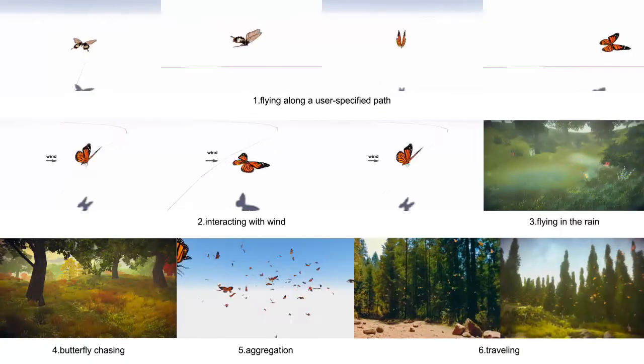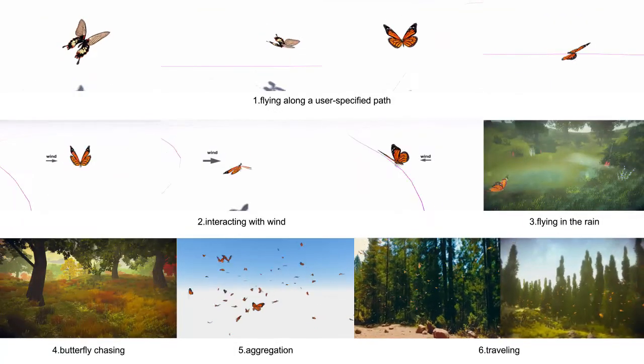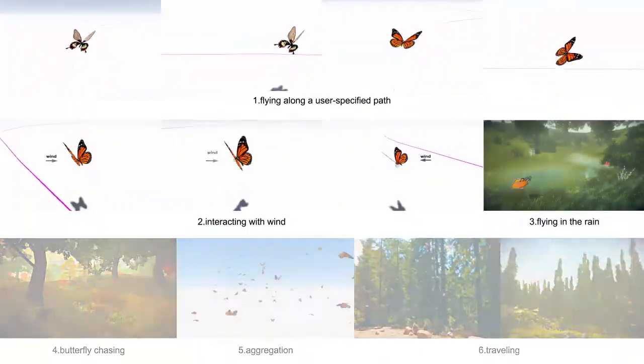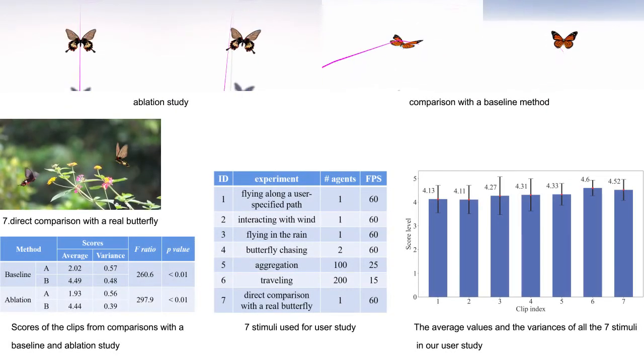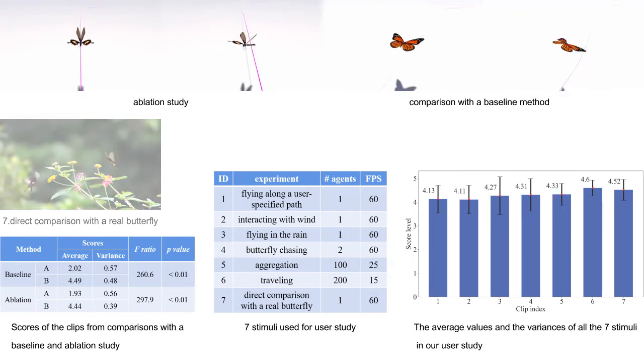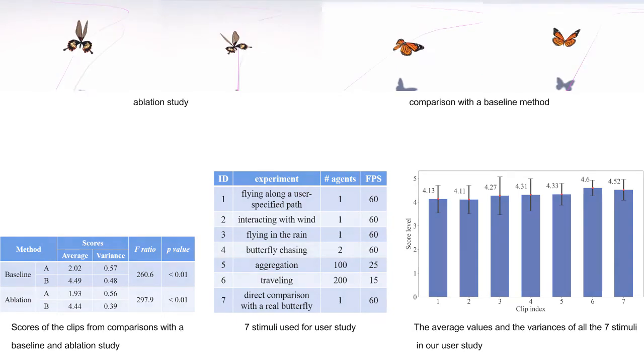To qualitatively evaluate the simulation results by our approach, we conducted a user study using a 5-point Likert scale. A total of 7 simulation results with ID from 1 to 7 were used as the stimuli in our study. The average score of all the stimuli is 4.32.